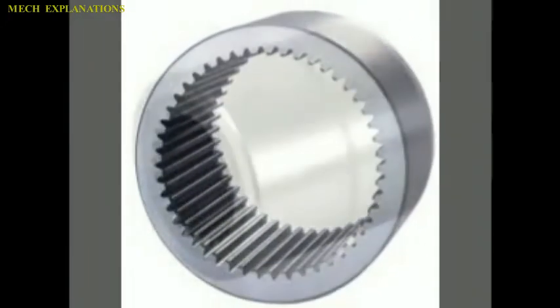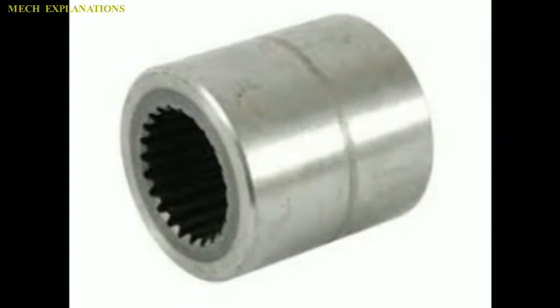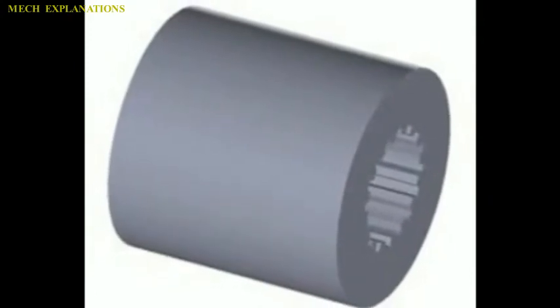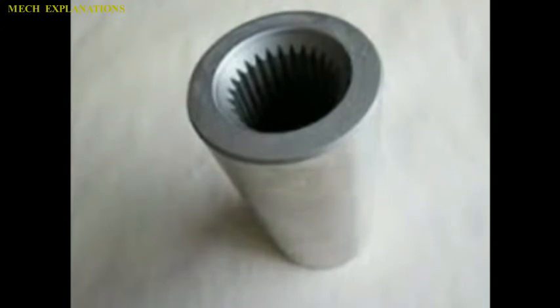A flanged bushing is a sleeve bushing that has a flange at one end extended radially outward from the outer diameter. The flange is used to positively locate the bushing when installed and to provide a thrust bearing surface.